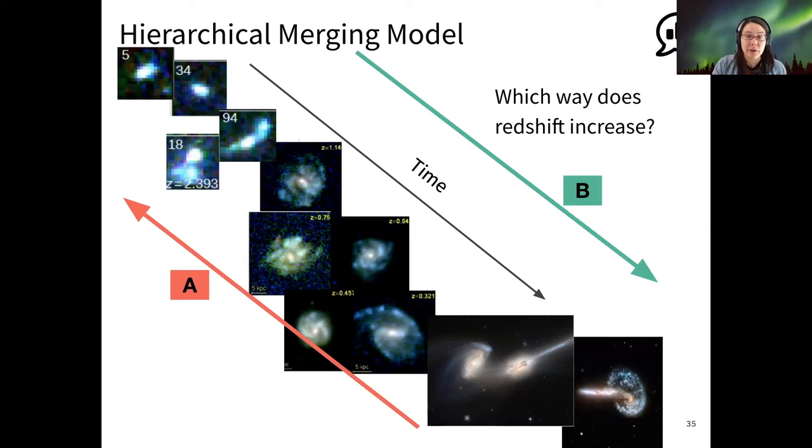But for now, I want to ask you, which way would redshift increase in our hierarchical merging model here? Okay, I see majority vote for A.